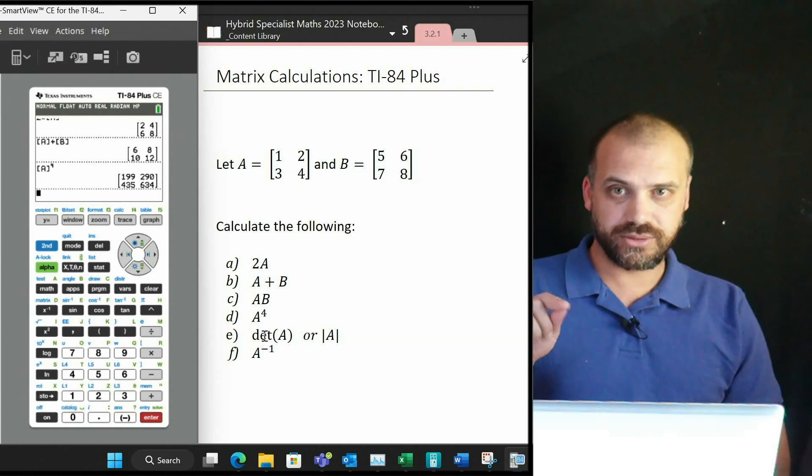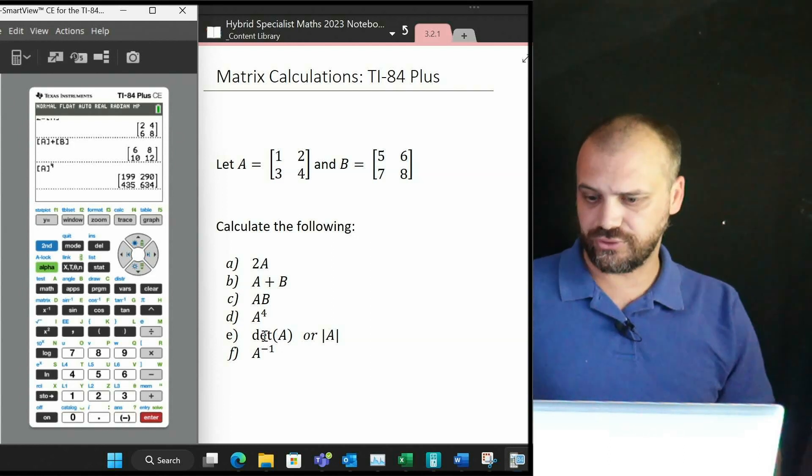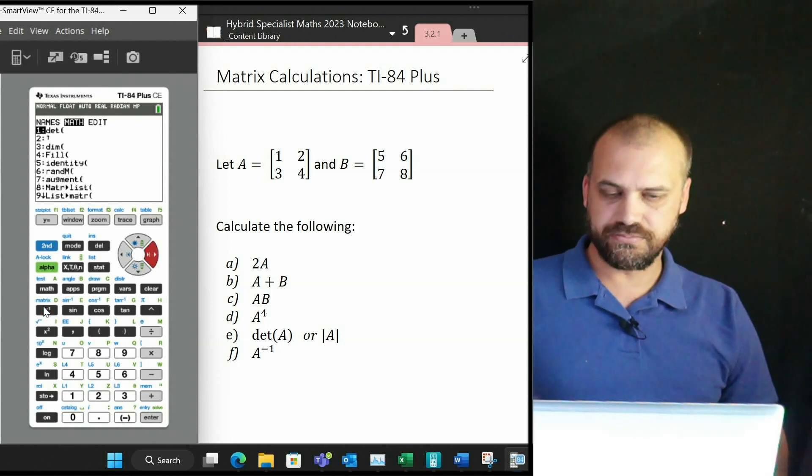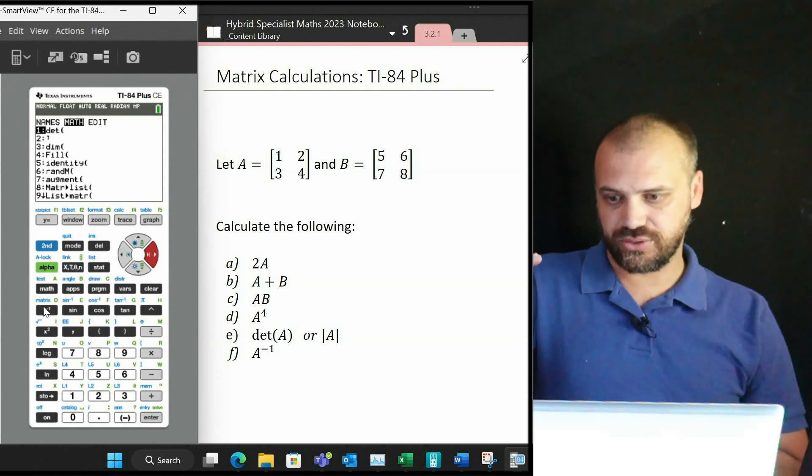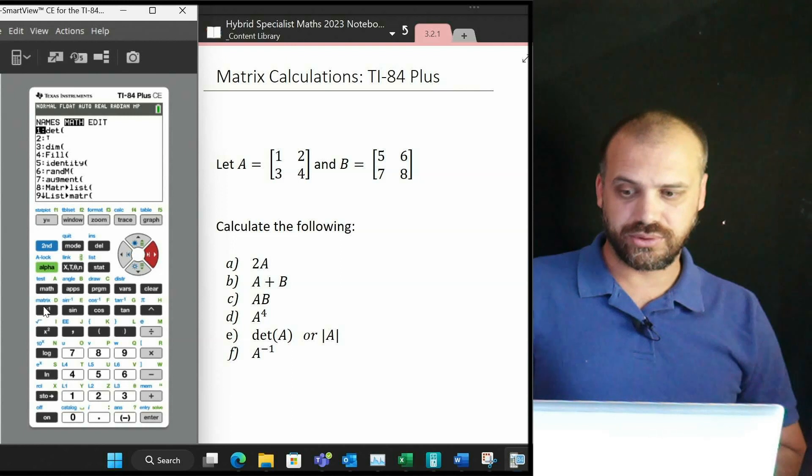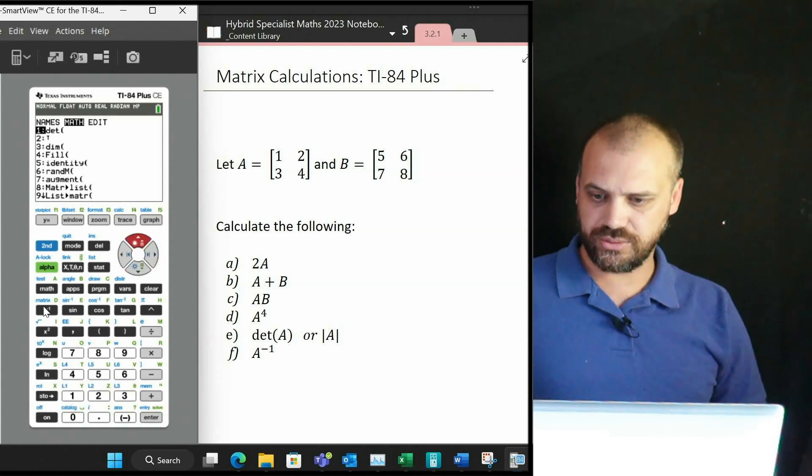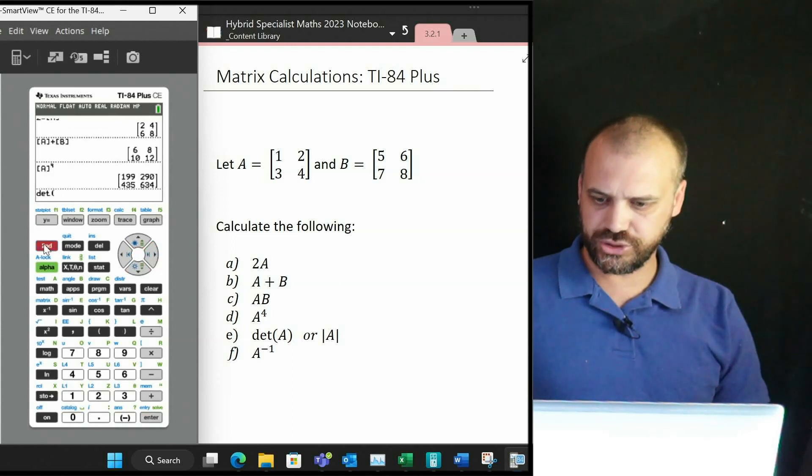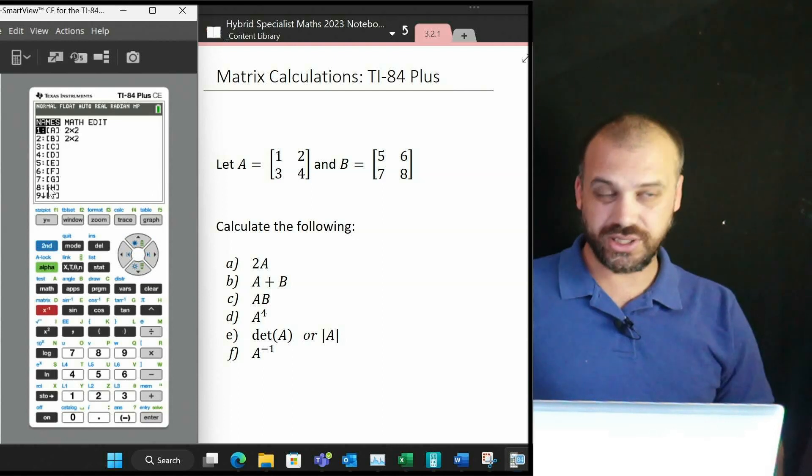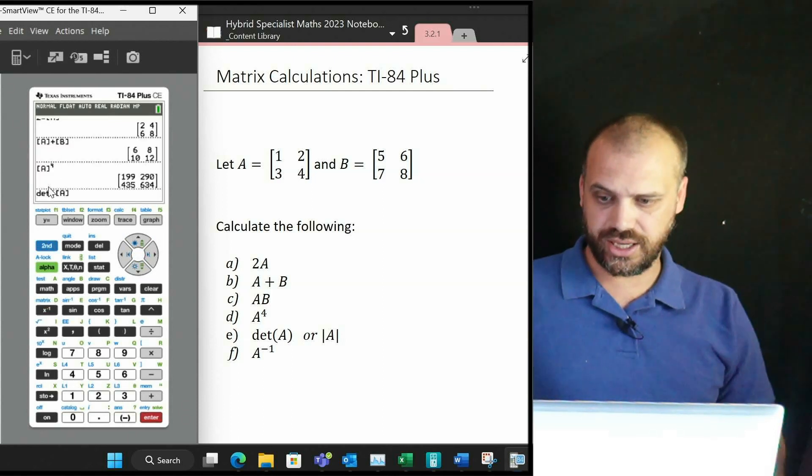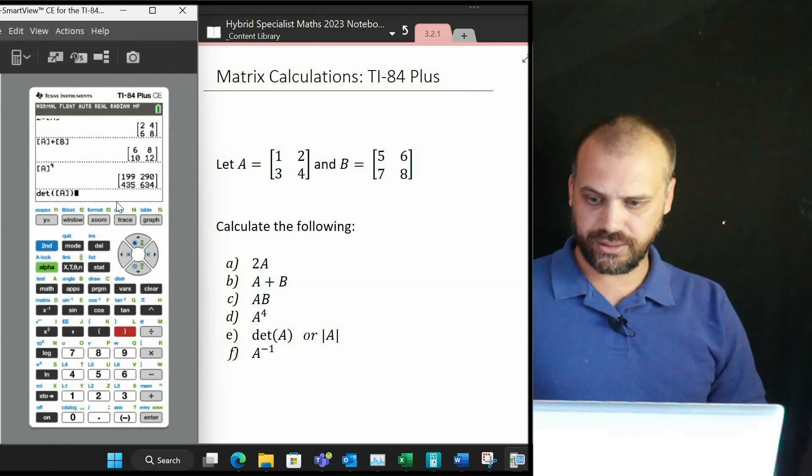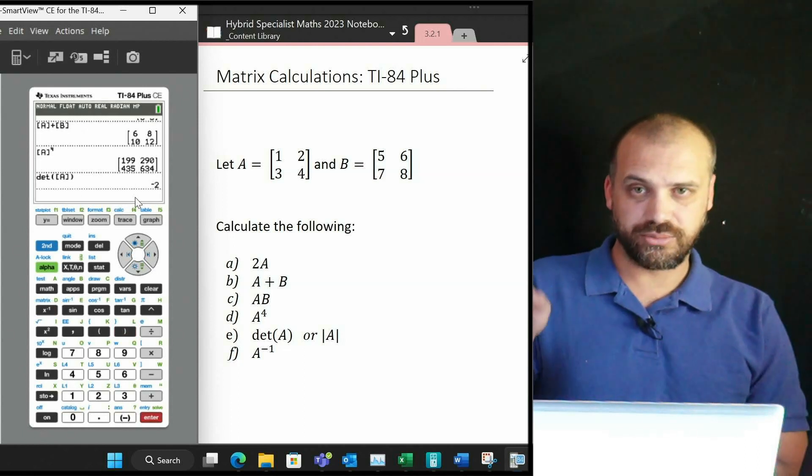If you want to do the determinant, very cool, slightly different. Second function matrix, where it says math here—these are a bunch of mathematical functions that have something to do with matrices—so I'm going to choose determinant here, and then I'm going to choose the matrix that I want in that determinant, which is A, close the bracket up, enter, and that's the determinant of A.